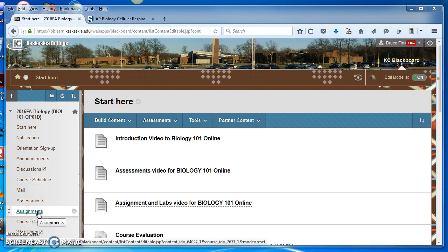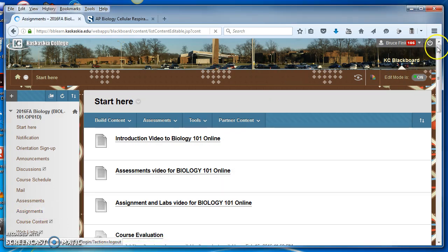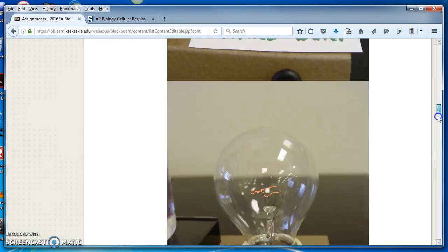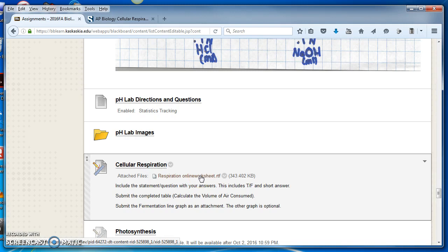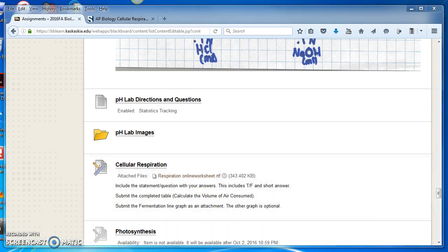You can also go to assignments. We'll click on assignments and scroll down and click on the respiration online worksheet and you'll see something like this.